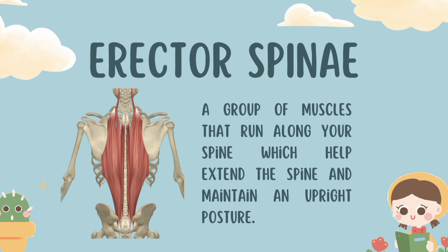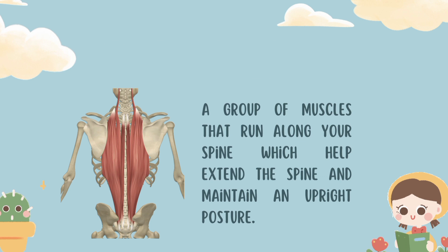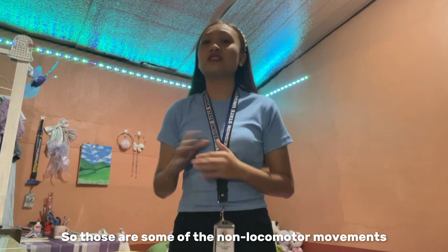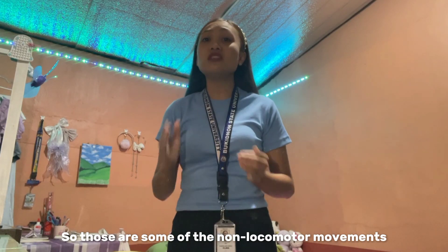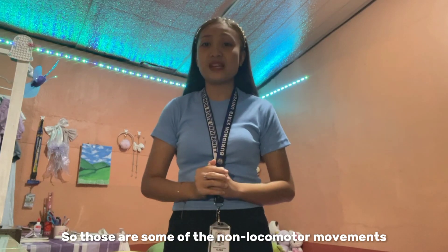Last but not the least is the erector spinae, the group of muscles that run along our spine, which help extend the spine and maintain an upright posture, enabling us to bend backward and stabilize our core during movements like lifting objects or arching our back.